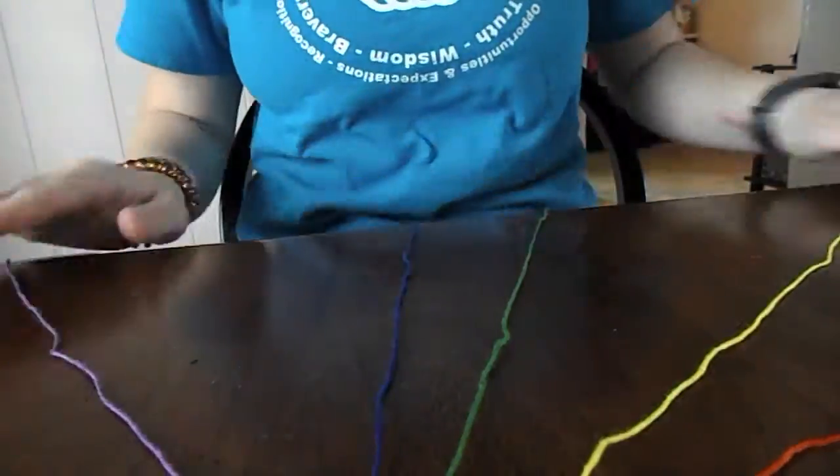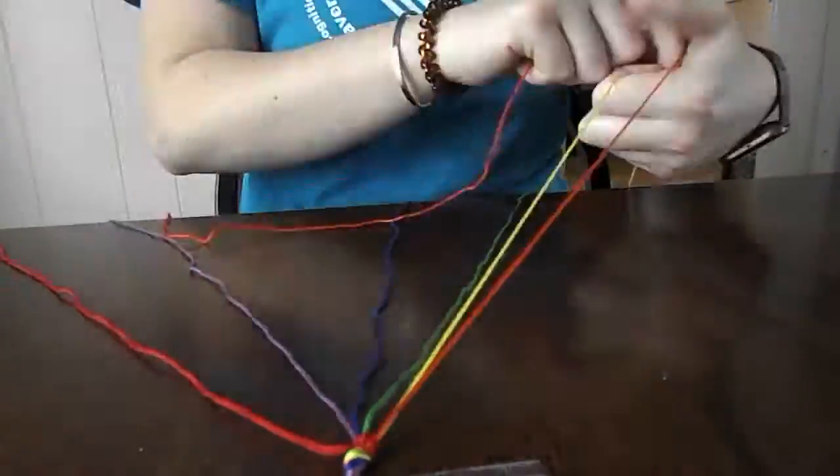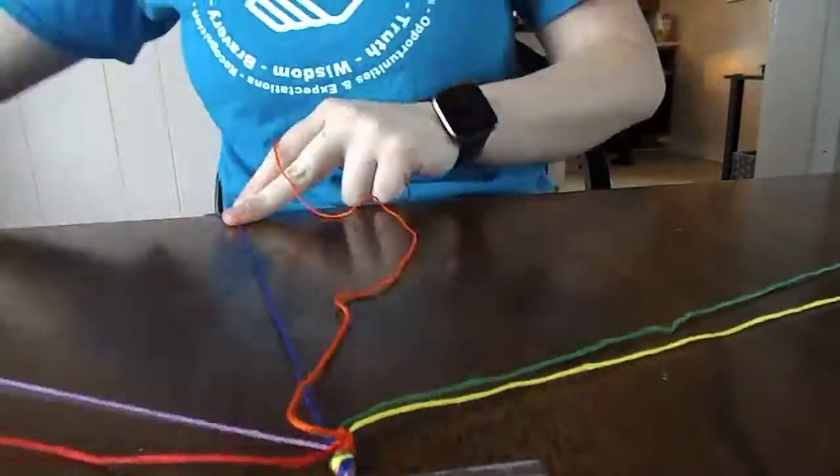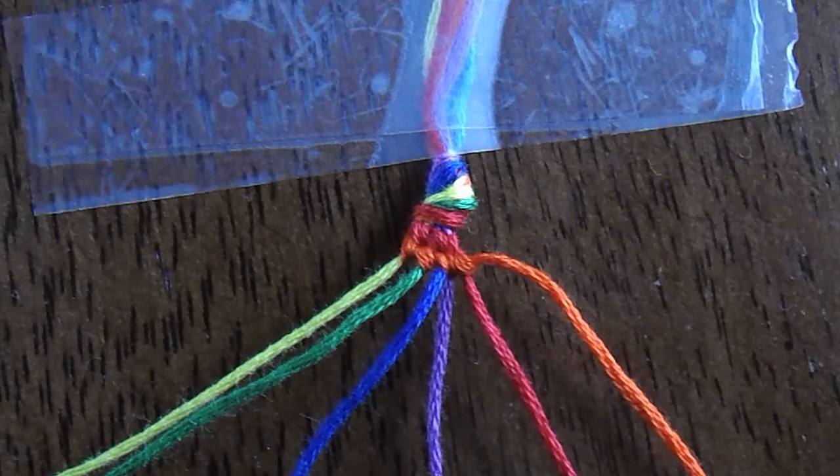Once you are done with your first row, you start again with string 2, the same process. 2 knots on each strand. It then should look something like this, starting to begin rows of each color.